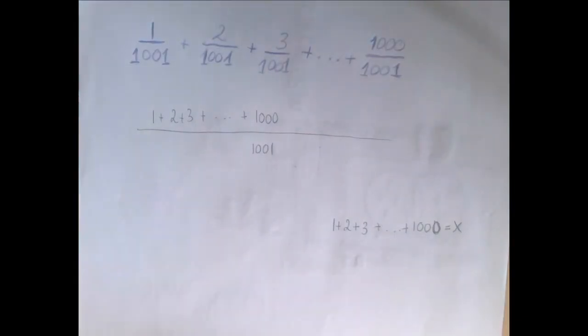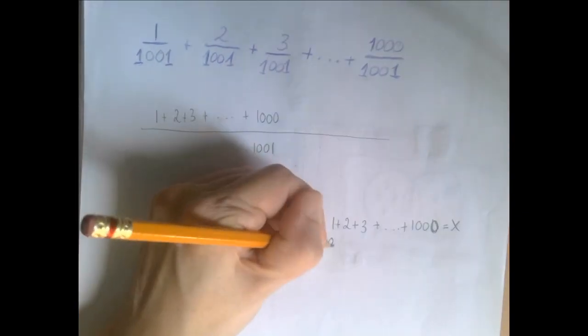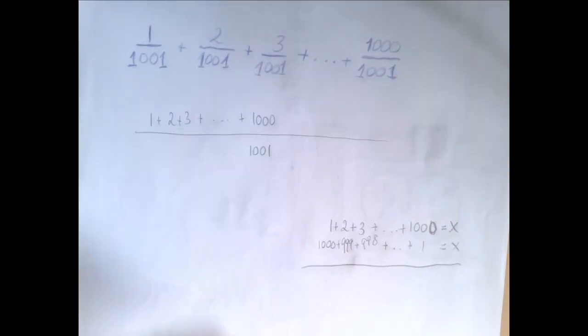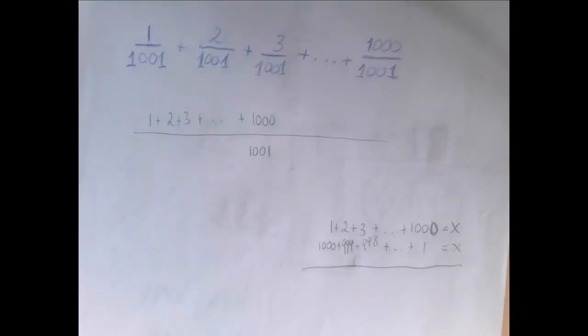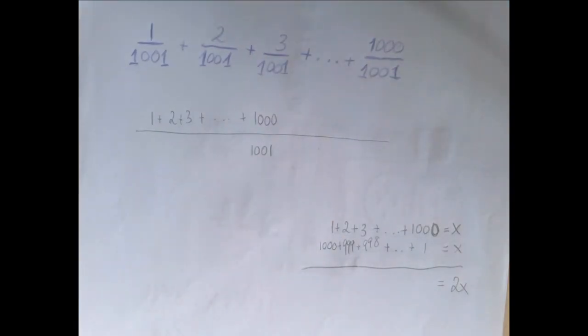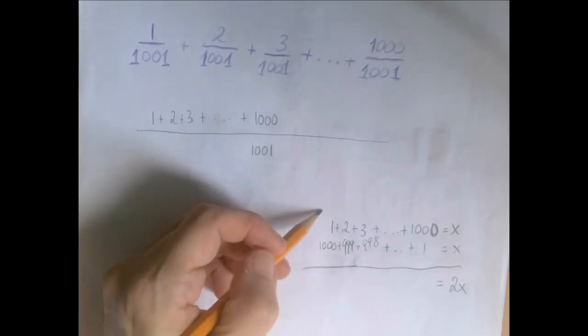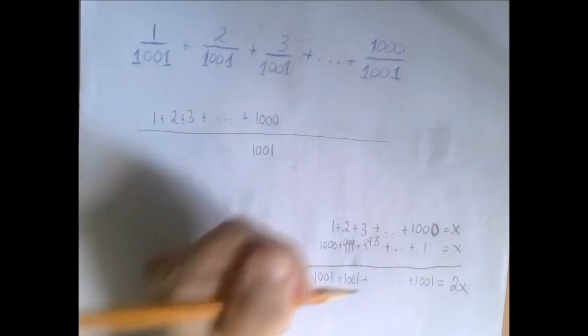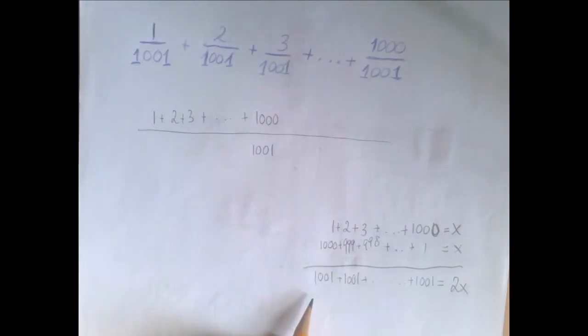And then we line up the same sum but backwards. So it's 1000 plus 999 plus 998 and so on. And then when we add the two lines on the right hand side we get 2x. And on the left hand side we add column by column. Each column adds up to 1001.